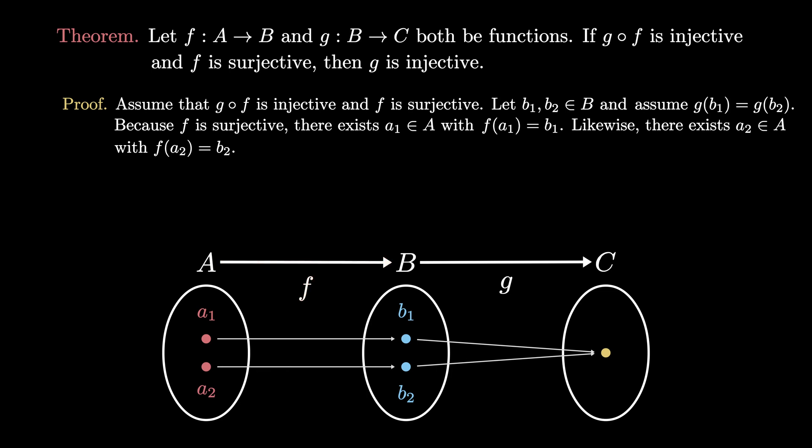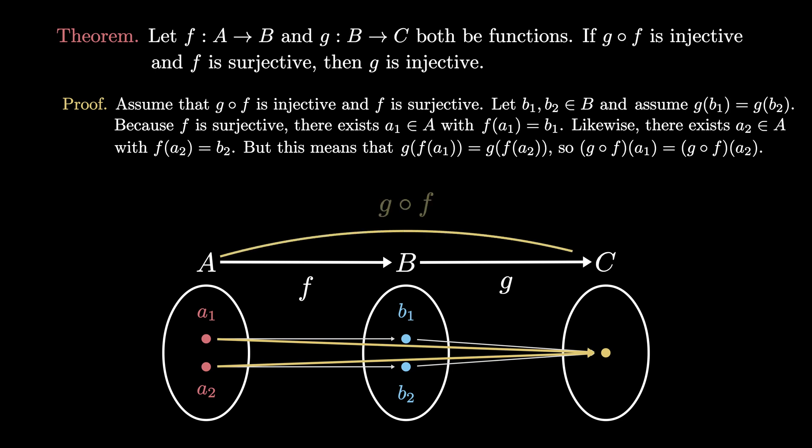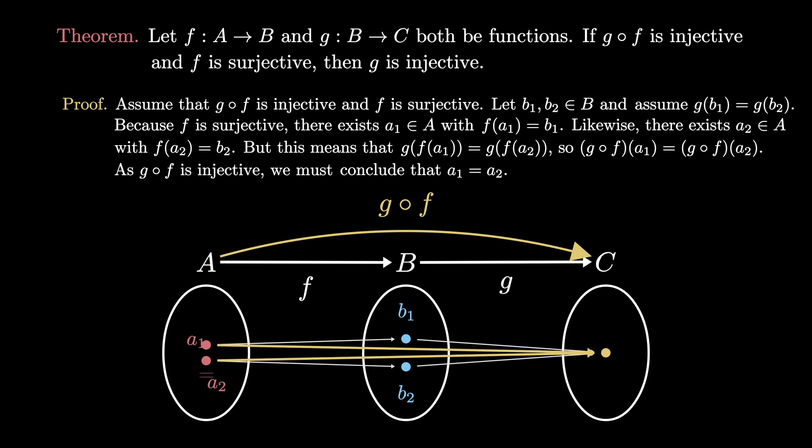But then according to the definition of composition, this means that g(f(a₁)) = g(f(a₂)), so (g∘f)(a₁) = (g∘f)(a₂). Because g∘f is an injective function, and a₁ and a₂ map to the same element in the codomain C, we must conclude that a₁ and a₂ are the same element.